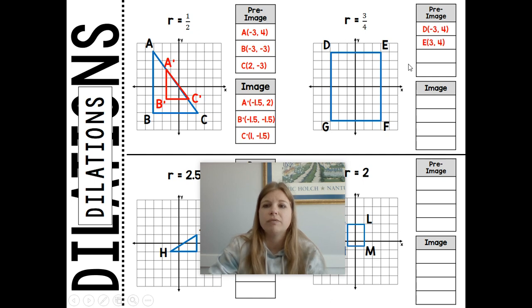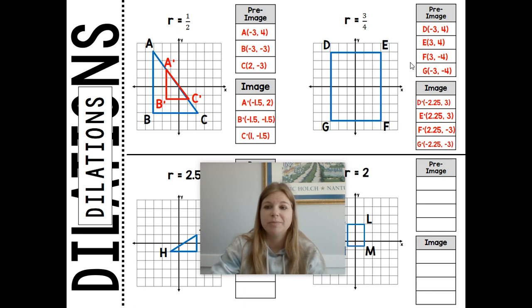Multiply all of these by 3/4. D prime would be (-2.25, 3), E prime is (2.25, 3), F is (2.25, -3), and G would be (-2.25, -3). And so I get a smaller figure—not as small as what half would do to a figure, but still definitely smaller.